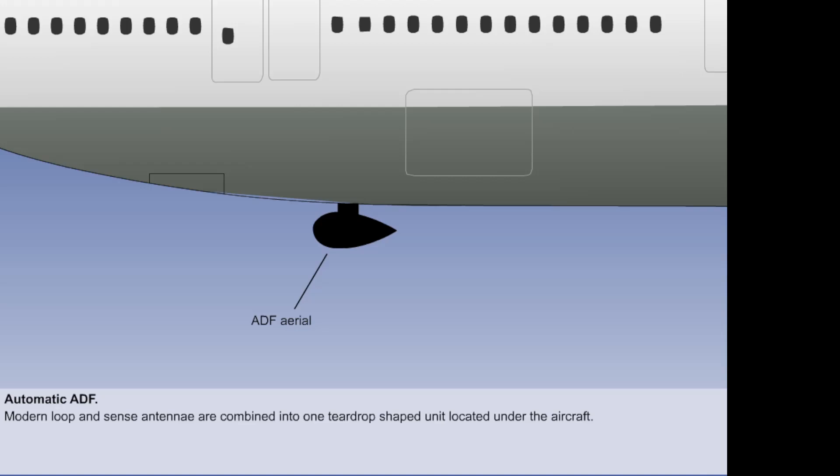Because it is impractical to have a moveable loop antenna on modern aircraft, current versions of the ADF combine both loop and sense antenna within a teardrop-shaped housing, mounted as near as possible to the centre line of the aircraft.